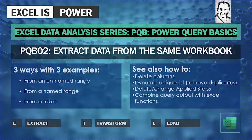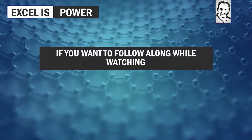Welcome to a new video from the Excel Data Analysis series — PQB Power Query Basics, video PQB 02: Extract Data from the Same Workbook. In this video we are going to see how we can get data from an unnamed range, a named range, and a table. We will also discuss how to delete columns, create a dynamic unique list by removing duplicate rows, delete or change applied steps, and combine query output with Excel functions.